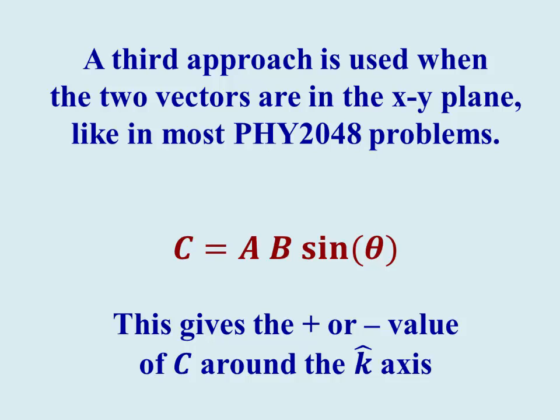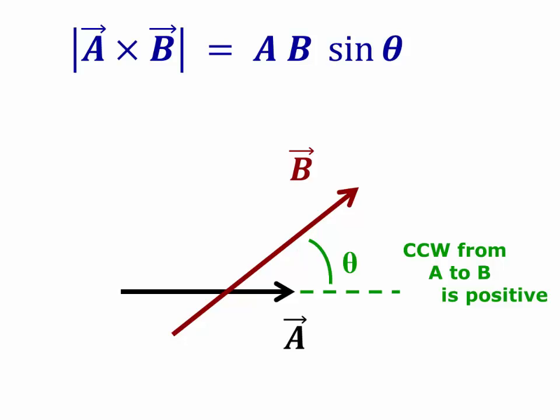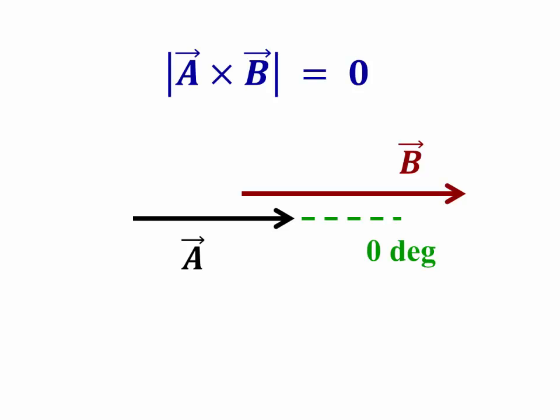Now, if both vectors are in the plane, like in the x-y plane, like we had in Physics 2048, then we can use the AB sine theta form, where the magnitude of the vector C is AB sine theta, and C comes out to be plus if it's in the plus k-hat direction, and minus if it's in the negative k-hat direction. This doesn't work if the vectors are quite arbitrary, but when they're in the plane, it's quite easy. So, again, I'll remind you that the angle theta is positive when it's counterclockwise from A to B. The order is essential. And then the magnitude of the cross product is AB sine theta, with a sign.